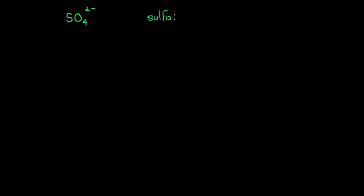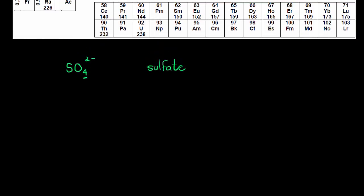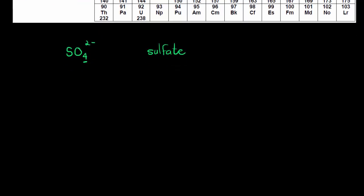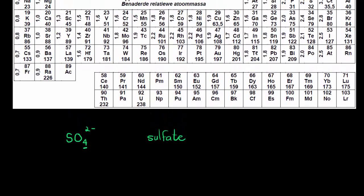An example is sulfate, which has a two-negative charge. This really intimidated me because there's so much to remember: the name sulfate, how many oxygens it has, and the charge. And it's not the only one — you get sulfate, nitrate, chlorate, and so many more, all slightly different.